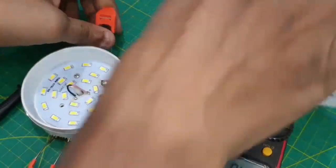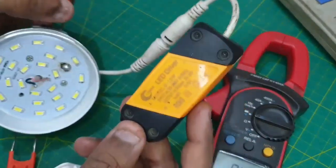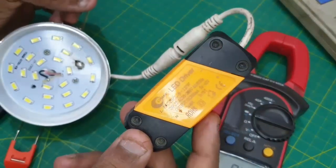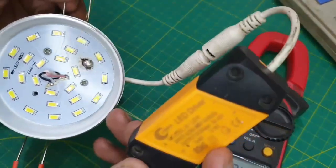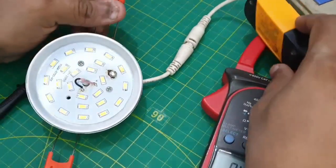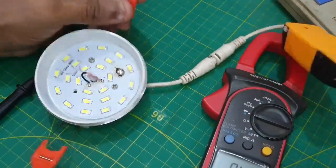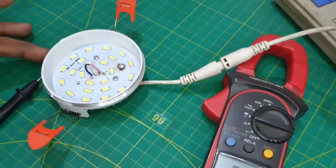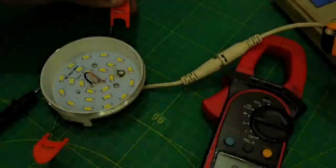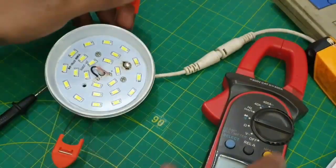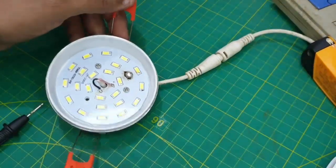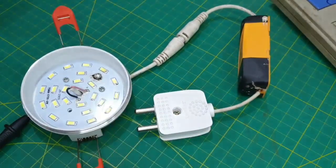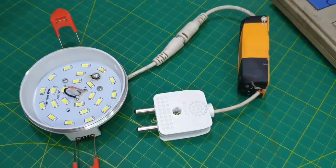This chip converts 220 volt AC to DC light - a circuit is used for this. You can see the light has been repaired successfully. You can see it here working.